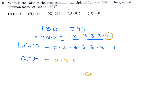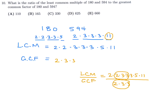Now find the ratio of the LCM to the GCF: (2×2×3×3×3×5×11) divided by (2×3×3). Cancelling common factors leaves 2×3×5×11, which equals 330. So the ratio is 330, and number 10, the answer is C.